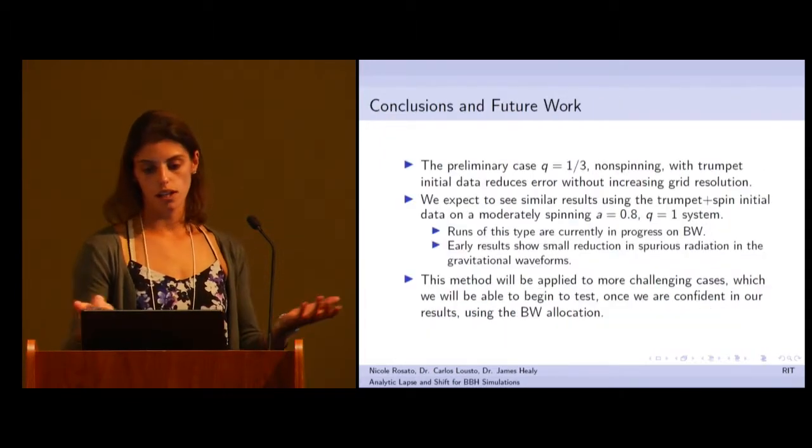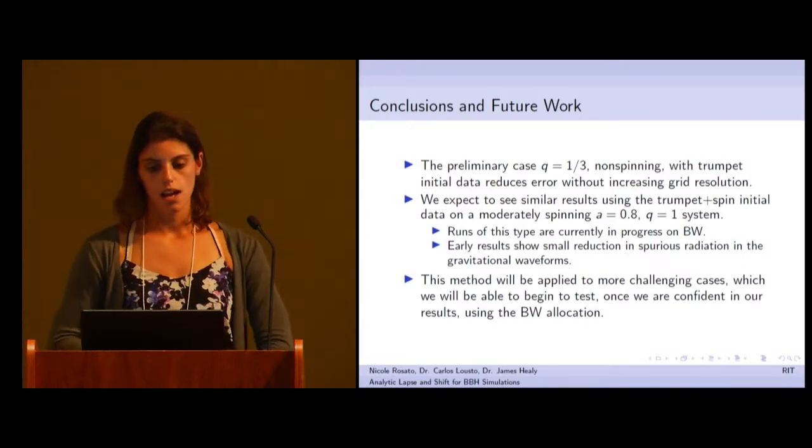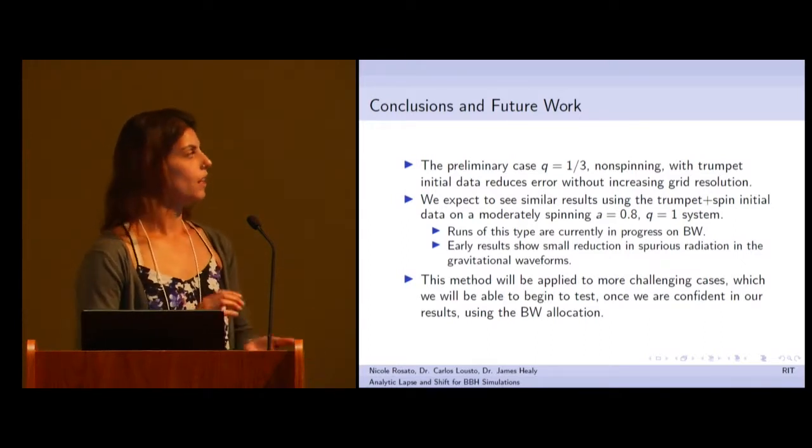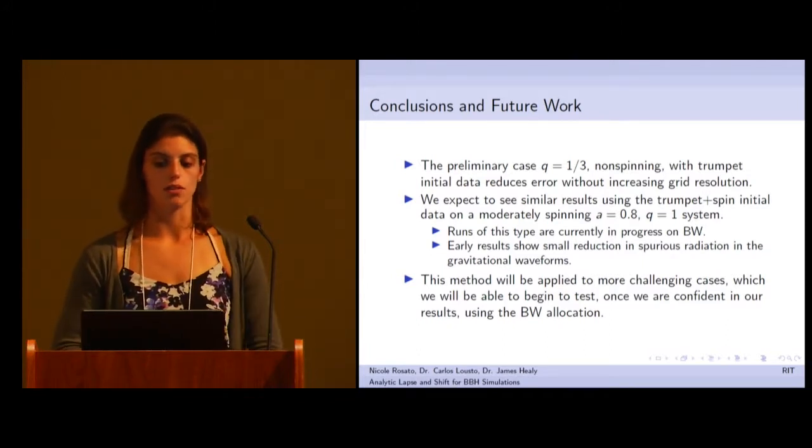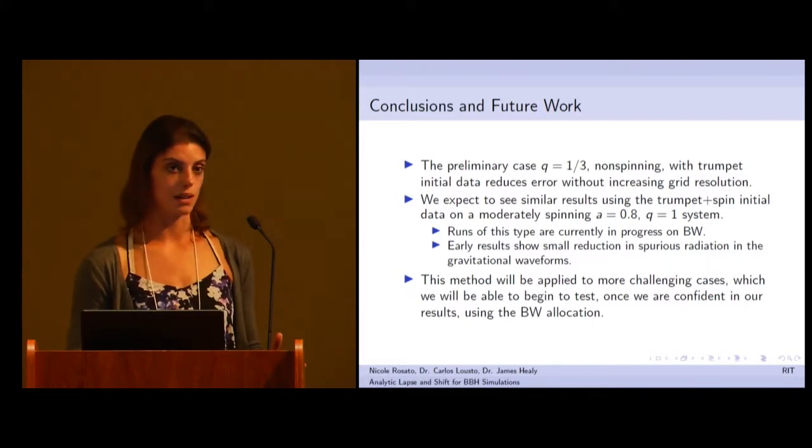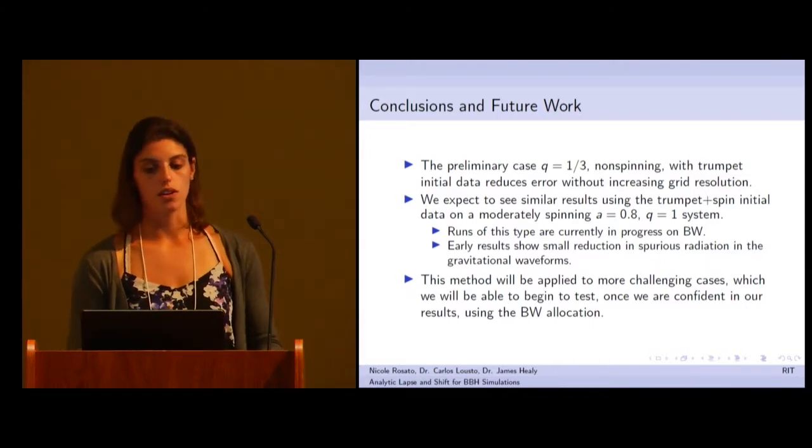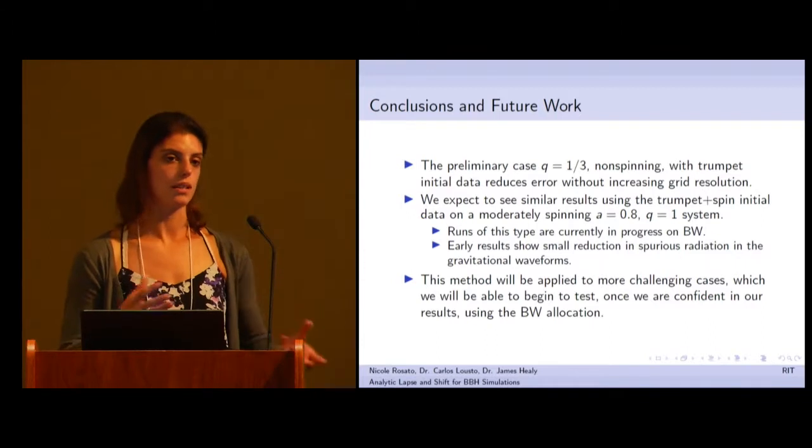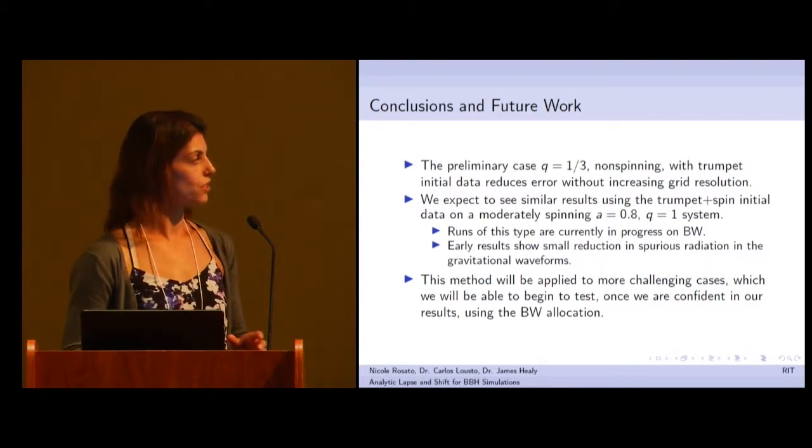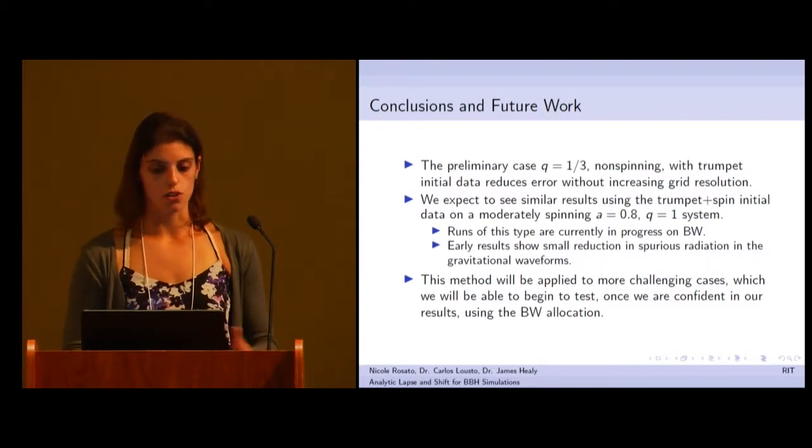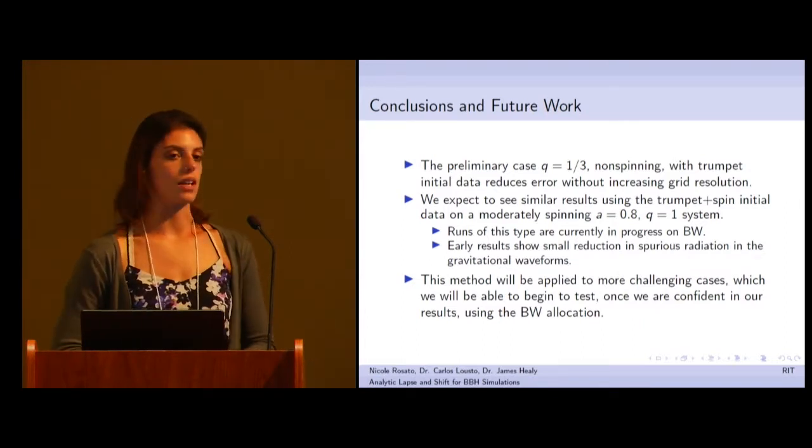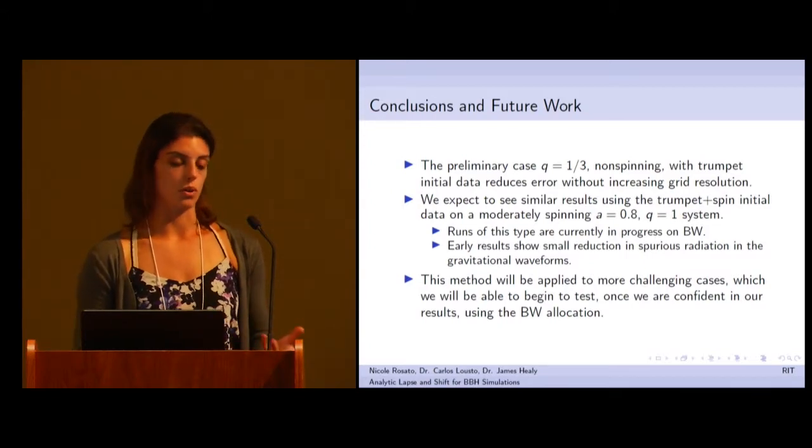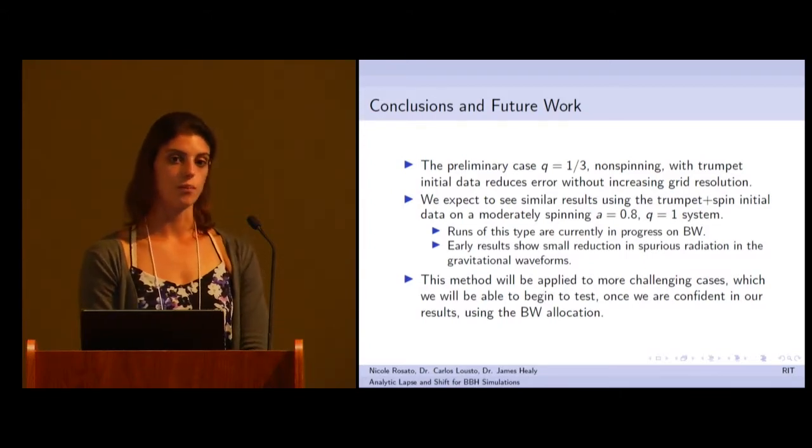I guess to conclude and talk about where I want to take this: preliminarily the Q equals one-third non-spinning trumpet initial data case works really well. So we expect to see similar results using the trumpet plus spin initial data. They're currently in progress, and we see some small reductions in spurious radiation in the gravitational waveforms. But again, I'm not going to show the results until I have them completed. This method will be applied to more challenging cases once we're confident in the results. So thank you.